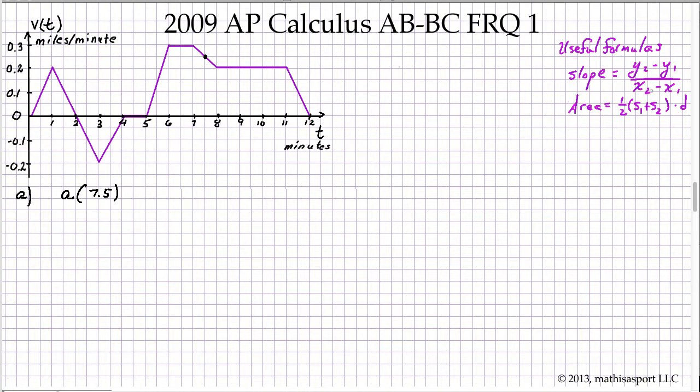We'll use this y2 minus y1 over x2 minus x1 formula, remembering that y is just a generic indicator for the variable associated with the vertical axis and x for the variable associated with the horizontal axis. In this case, the vertical axis is velocity, so what we're really talking about is v8 minus v7 over 8 minus 7.